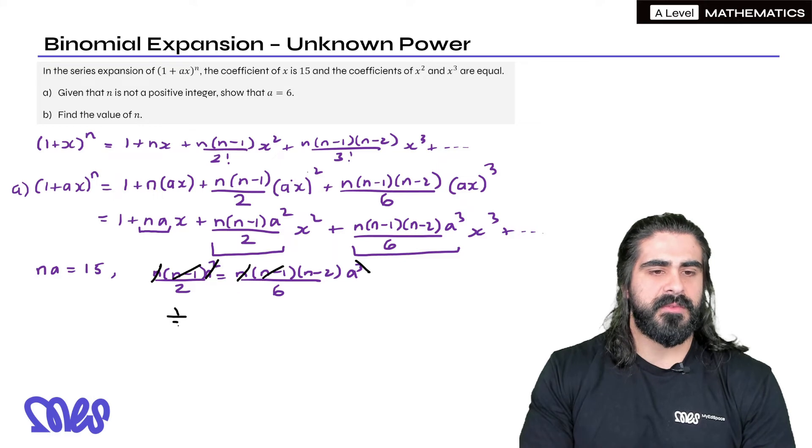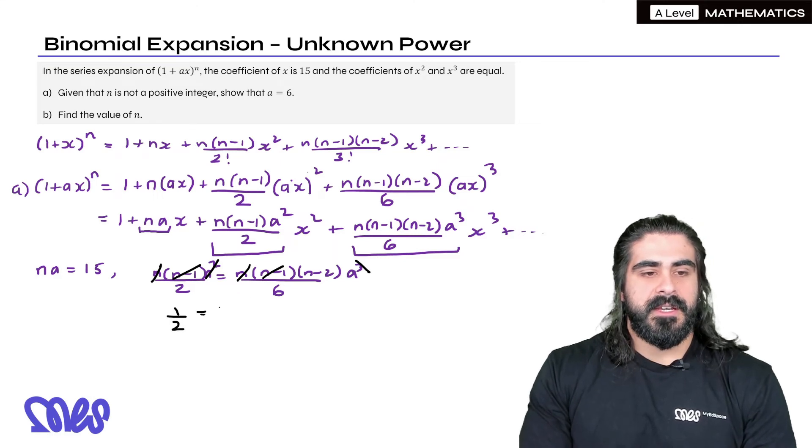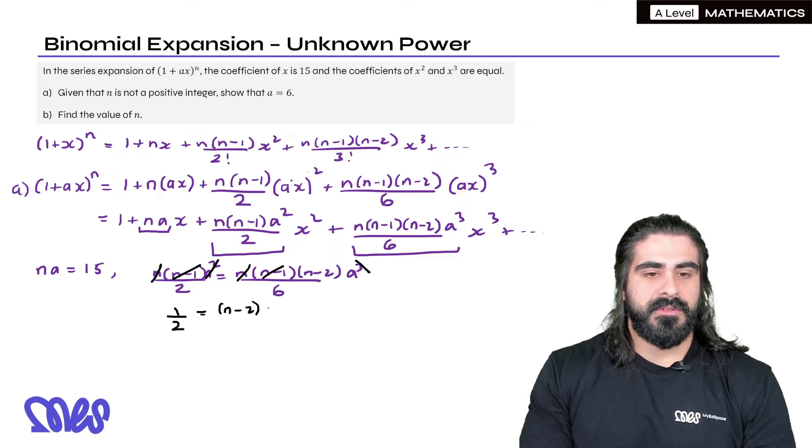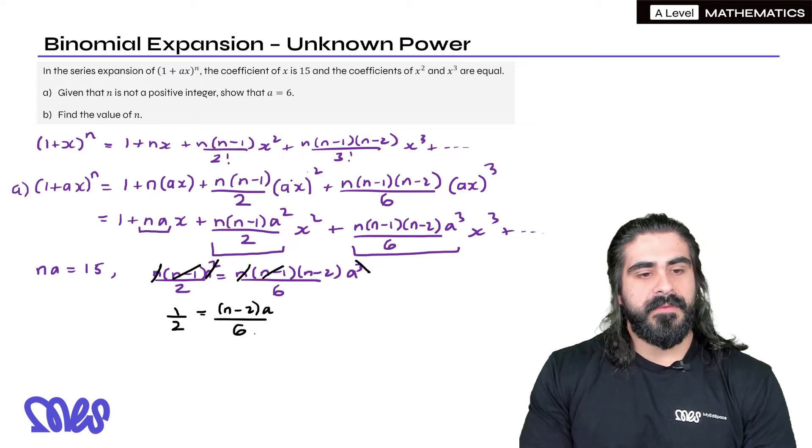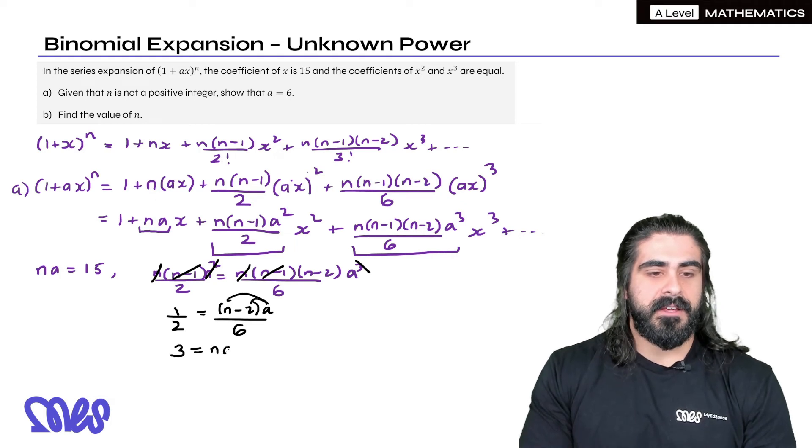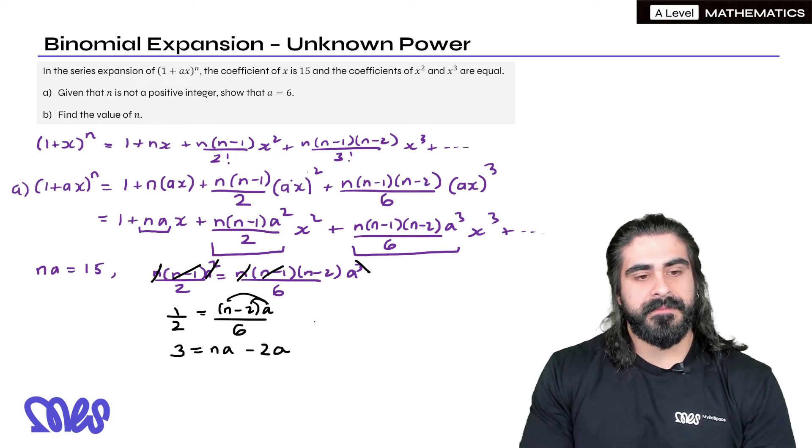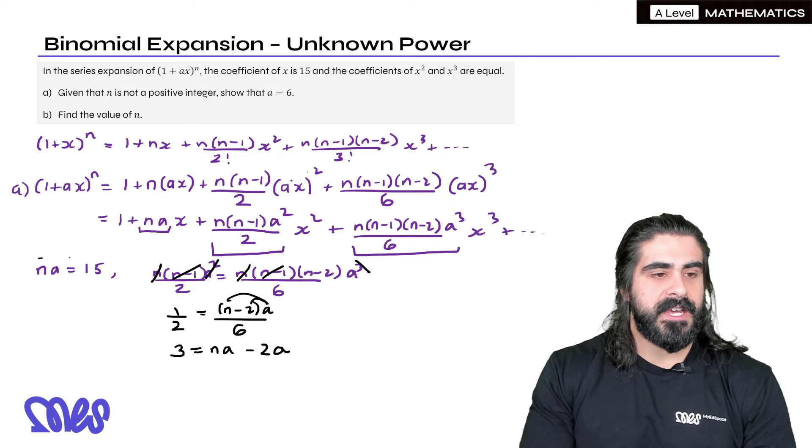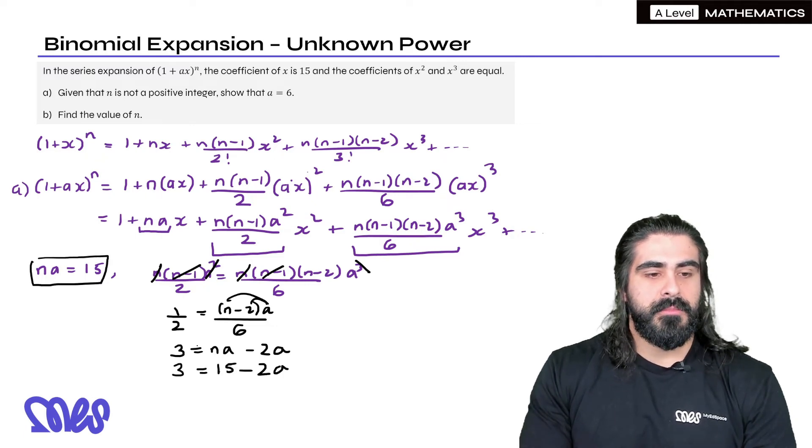So we have a half equals (n minus 2)a divided by 6. So if we times through by 6, I'm going to expand. So we have 3 equals na minus 2a. Now here you might notice that na is 15. So we can make that substitution. Move the minus 2a over, so 2a equals 12, a is 6.